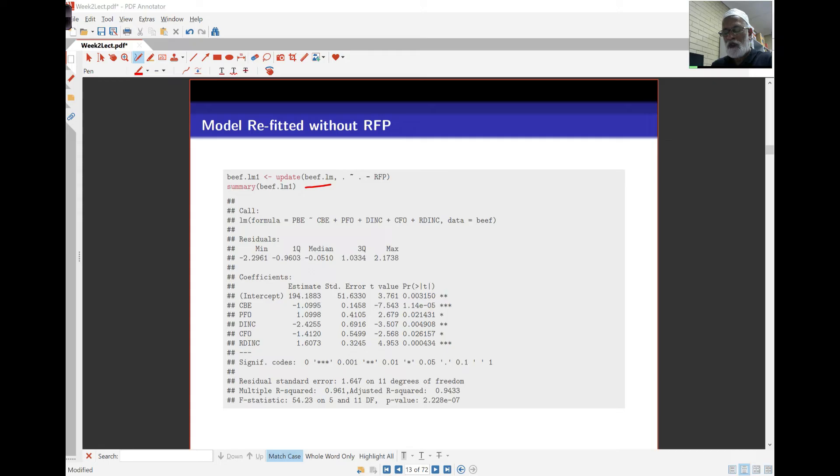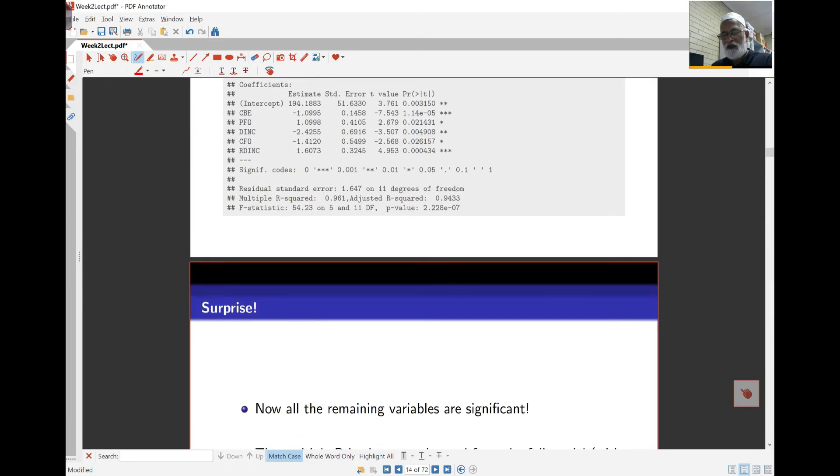So all of a sudden, by dropping just one variable, we find that the model has all variables now significant. And this is not very unusual, but it doesn't happen all the time. Usually, you find dropping one variable means that maybe some other variables change significance, but it's not often you find that all the remaining variables become significant. So here's a surprise here.